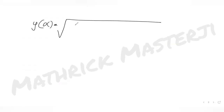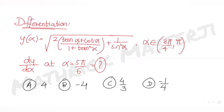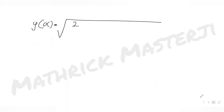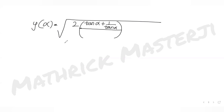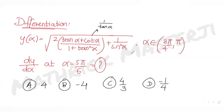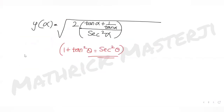We have y(α) = √2 · (tan α + cot α) / (1 + tan²α) + 1/sin²α. Since cot α = 1/tan α, tan α + 1/tan α becomes (tan²α + 1)/tan α. Using the identity 1 + tan²α = sec²α, the denominator becomes sec²α.